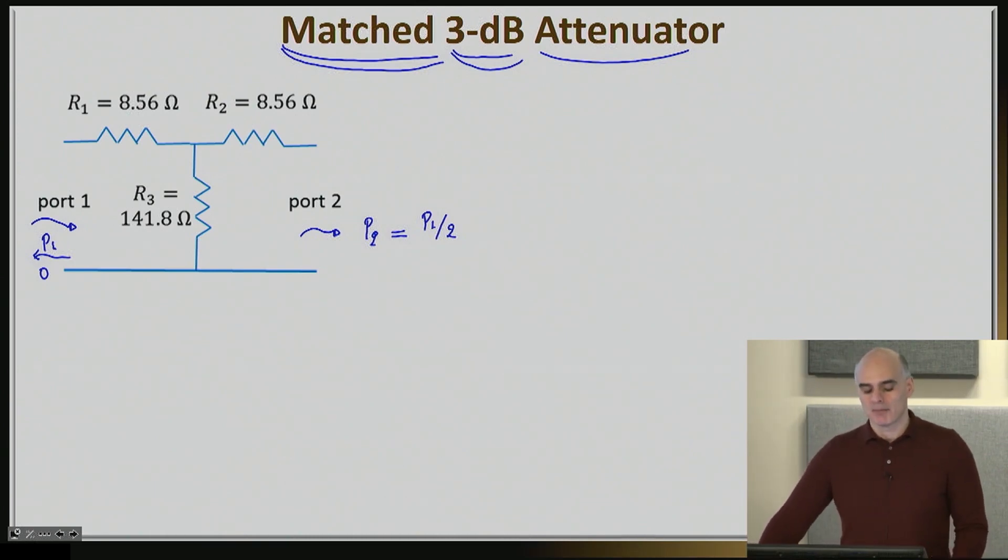As we're going to see here, by correctly selecting the resistance values R1, R2, and R3, you can actually get the matched attenuator. The values have actually already been selected for you. There is a way to solve these equations that you will see in a minute to get these numbers, but I just decided to give you the numbers and simply focus on calculating the S-parameters for this network.